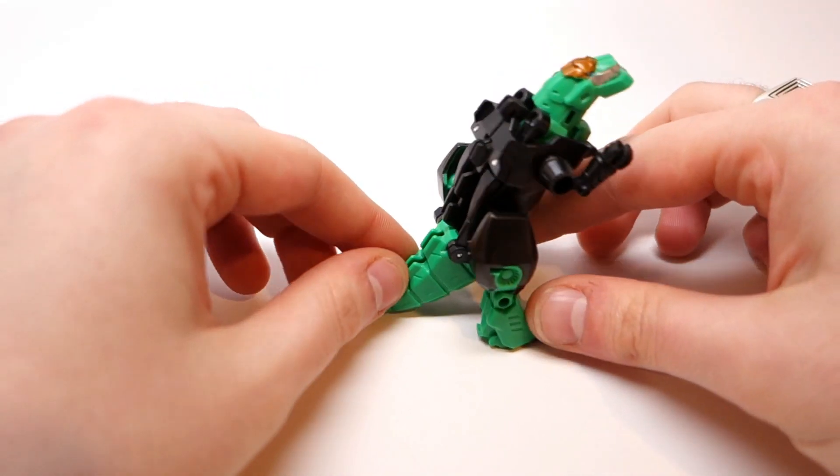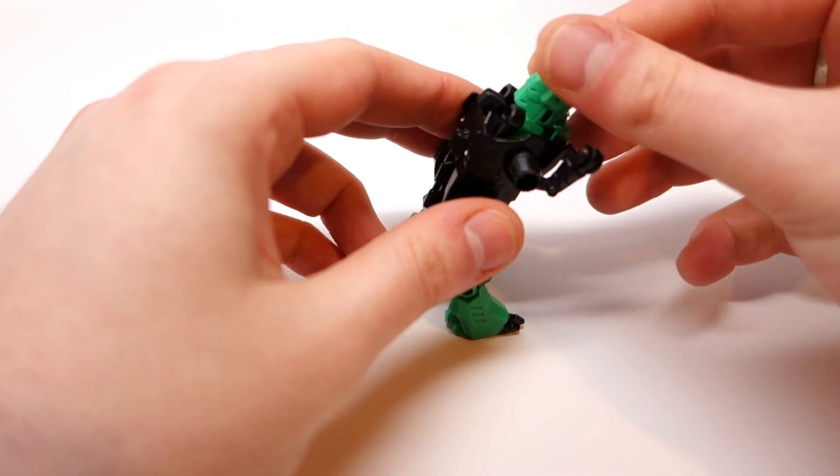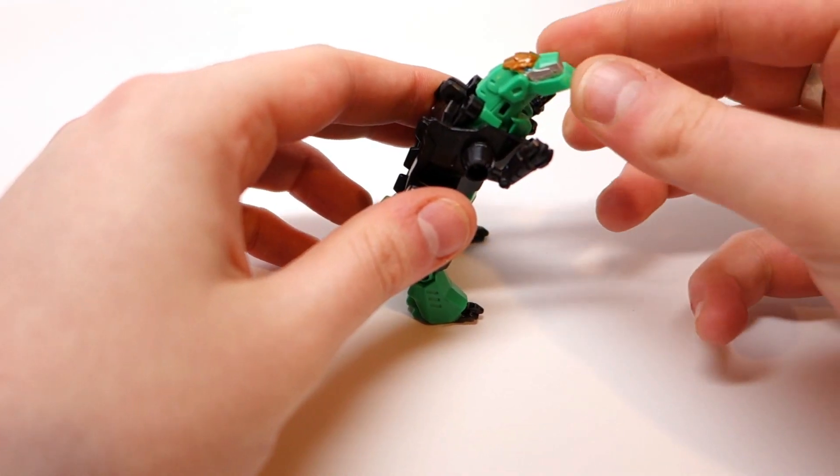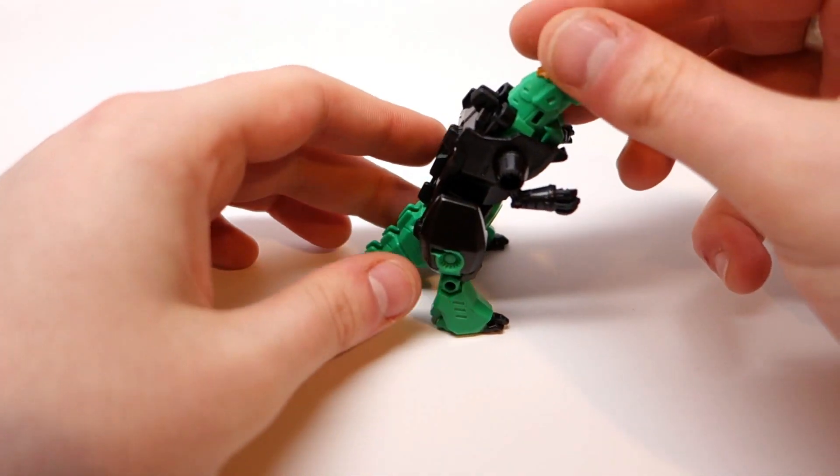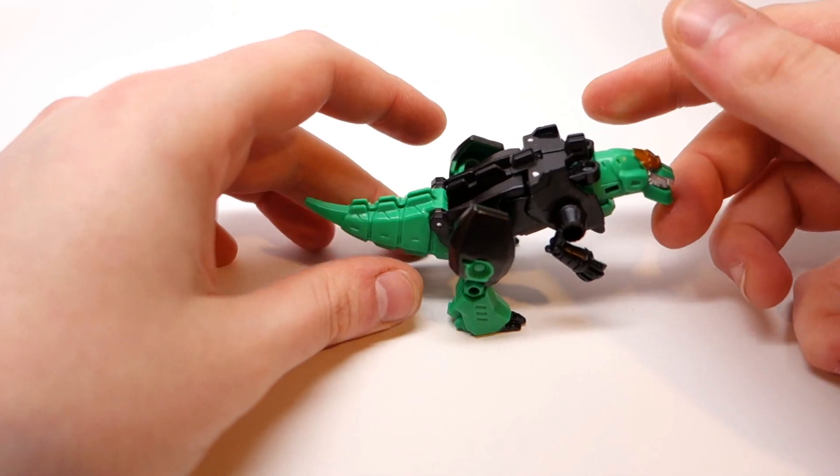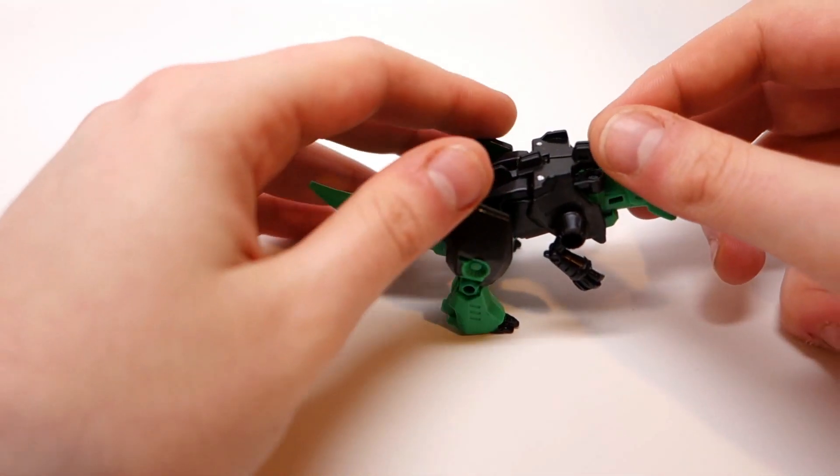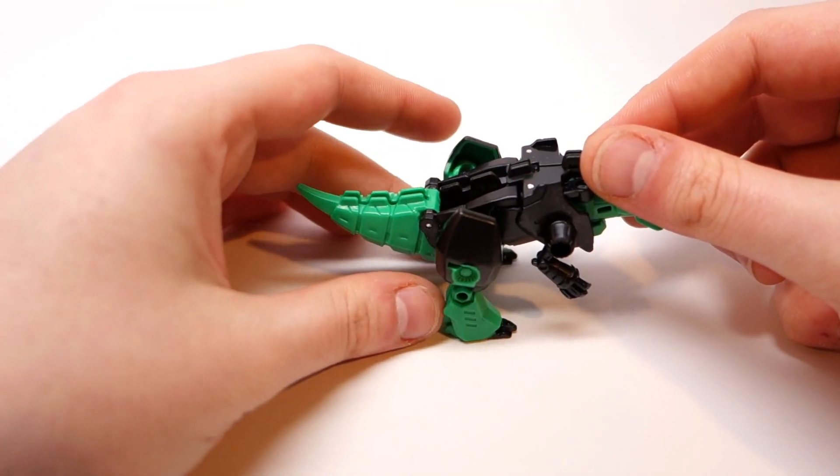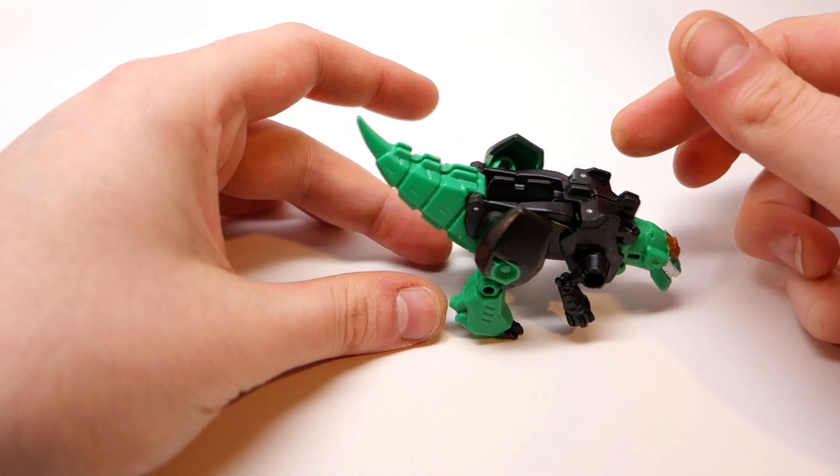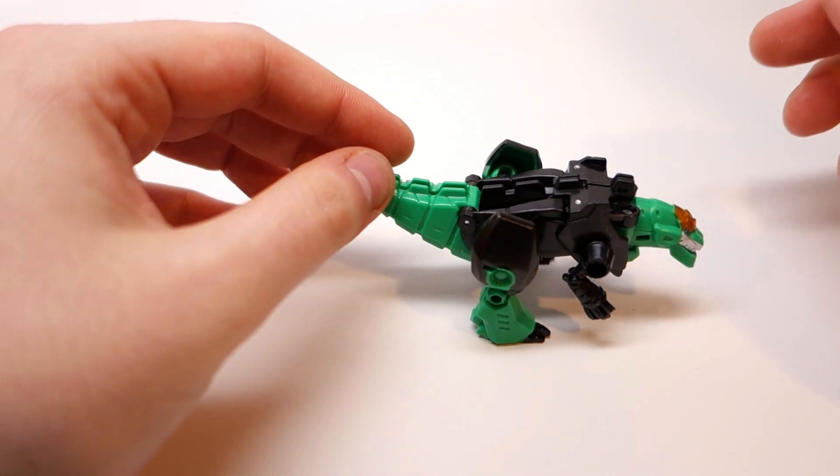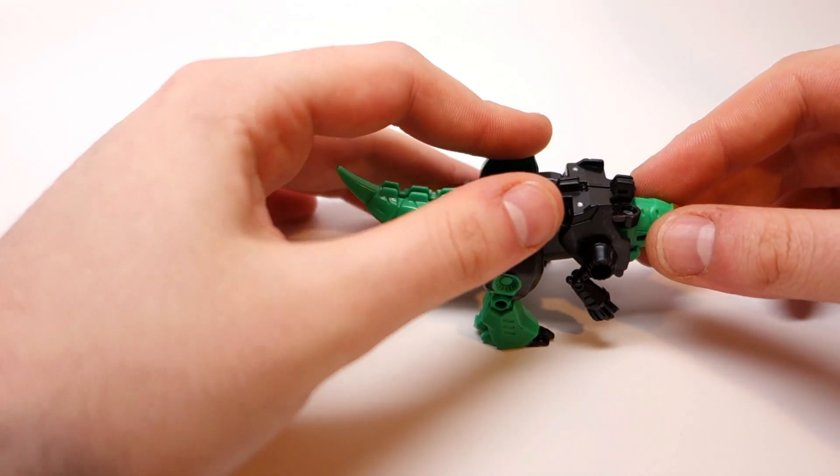You can have him in more of a standing up pose if you want. Although his head doesn't move, so he's always going to kind of be looking up a little bit. But you can also lean him forward quite a bit before he starts falling over. I can usually get him to about there, which is much further down than most people are probably going to want him anyway.